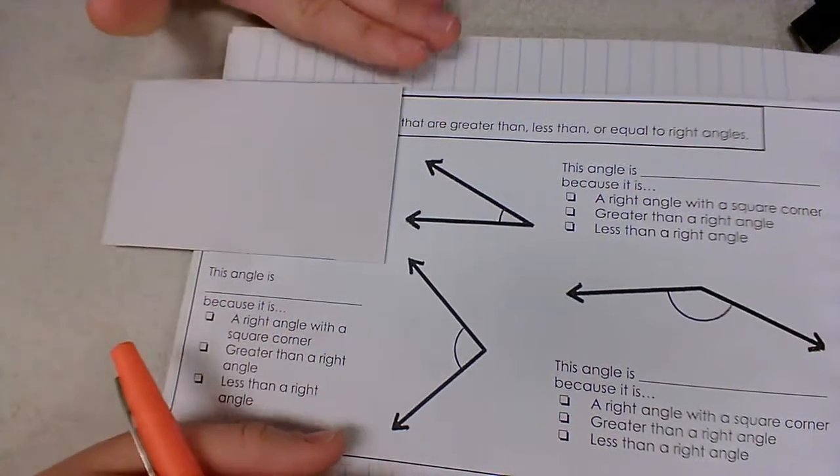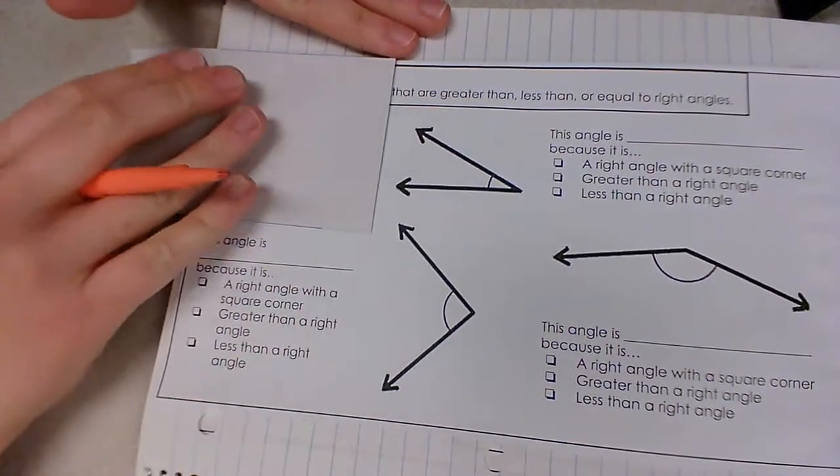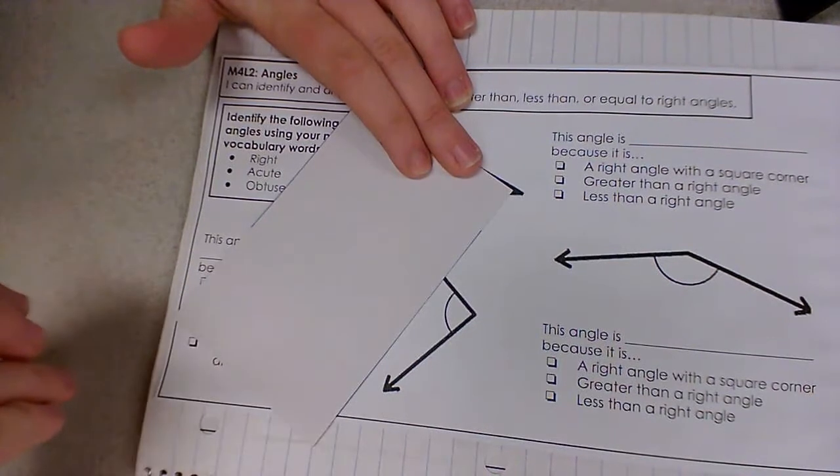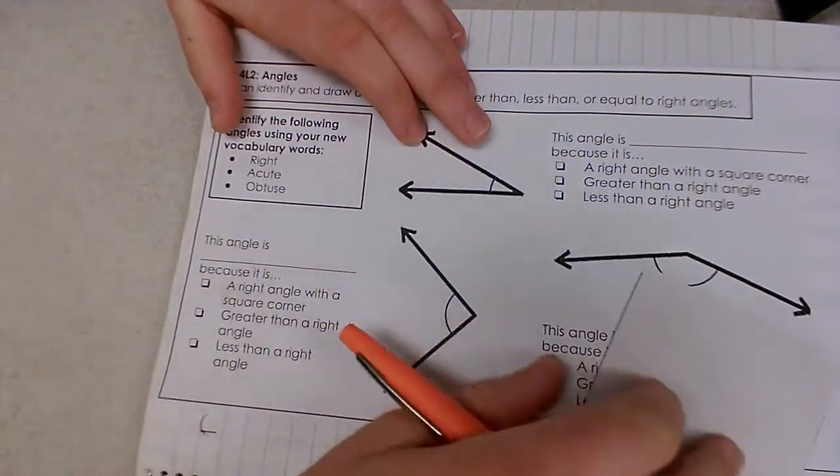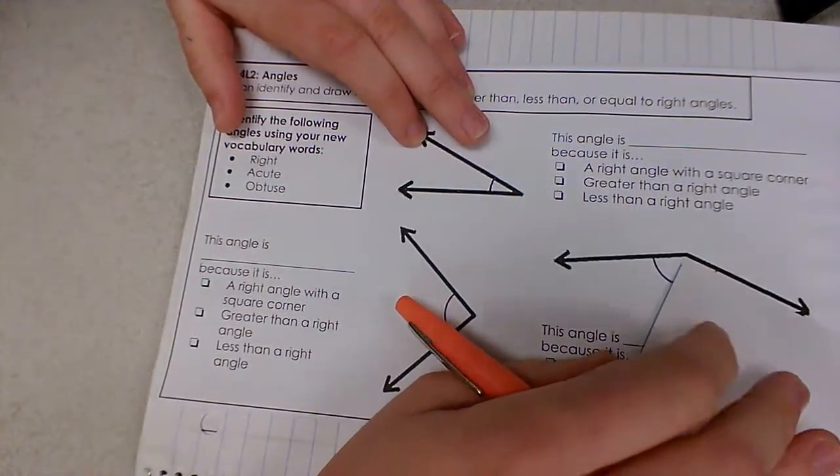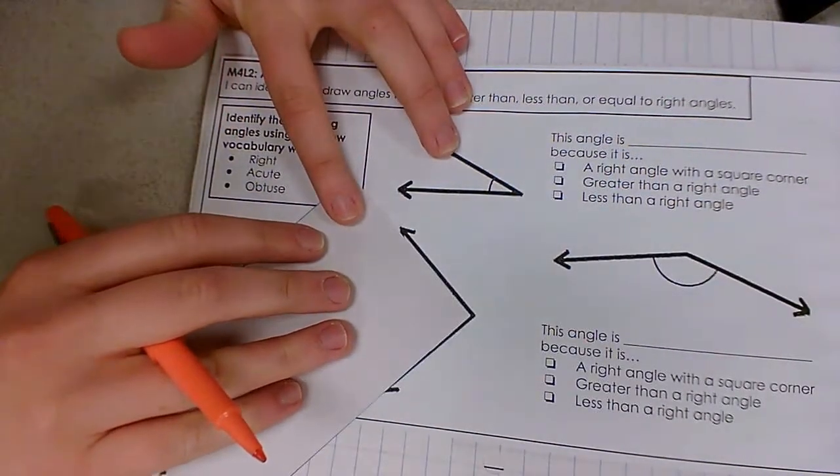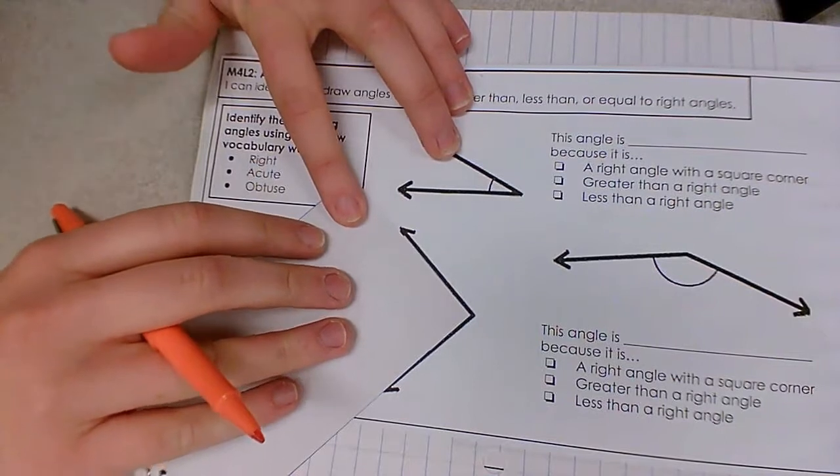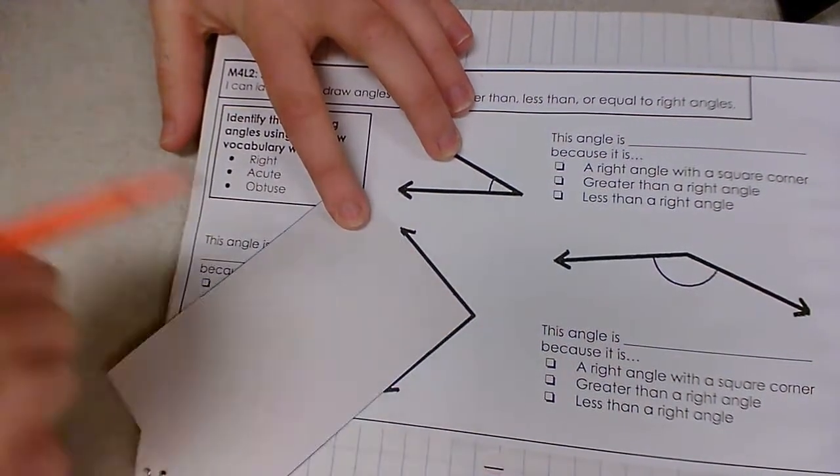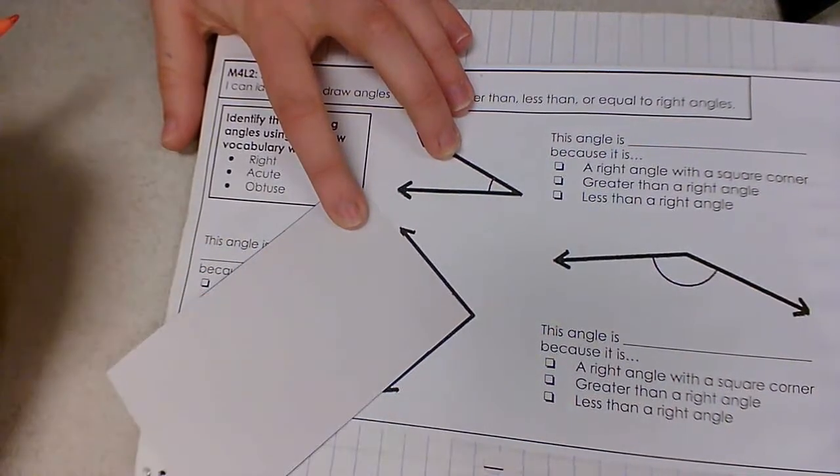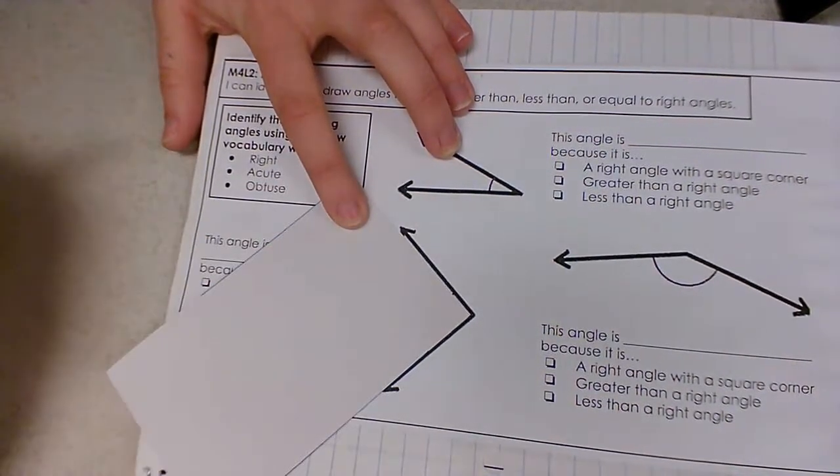So let's start by locating that right angle. I'm going to take my square corner and place it in the center of the angles until I find the angle that I think fits it best. And it looks like it's this angle right here. I can tell because both lines hug the edge of my note card. This must be my right angle since it has a perfect square corner.